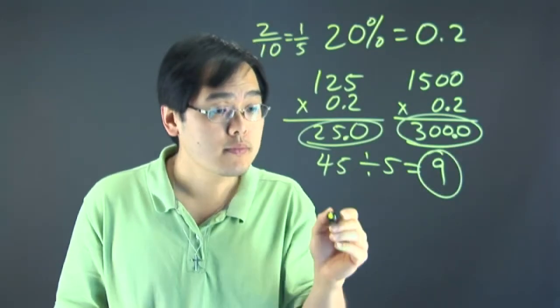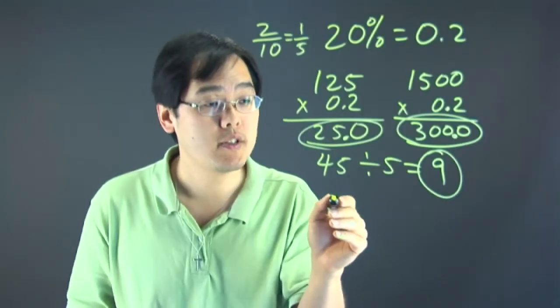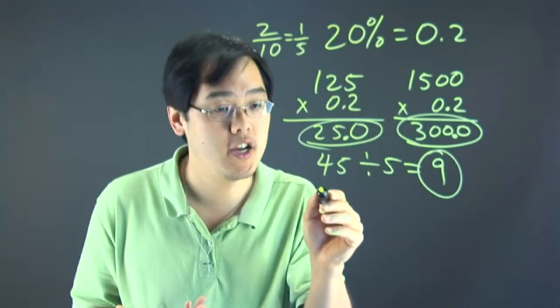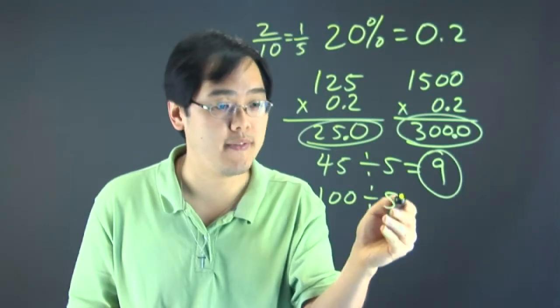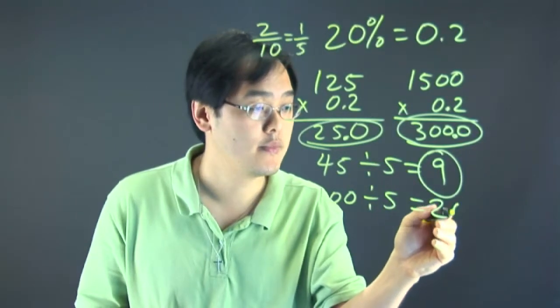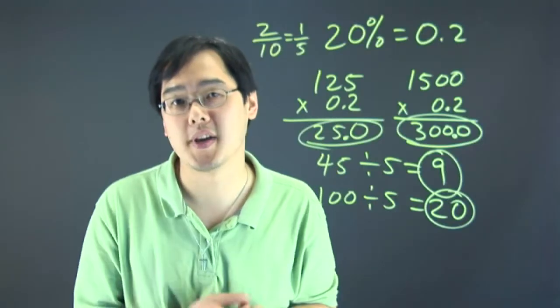And if you want to find out 20% of 100. Take 100, divide by 5, and you'll get 20. A little simpler than the others, I know.